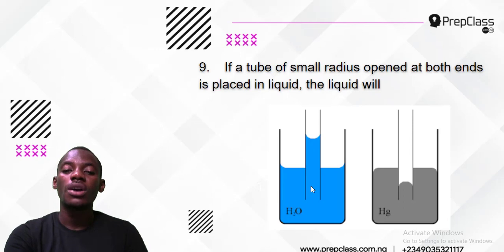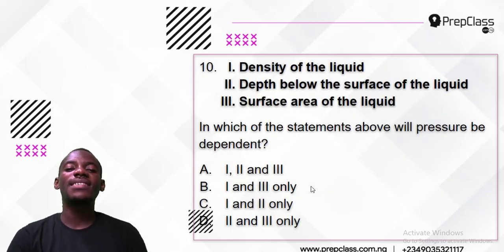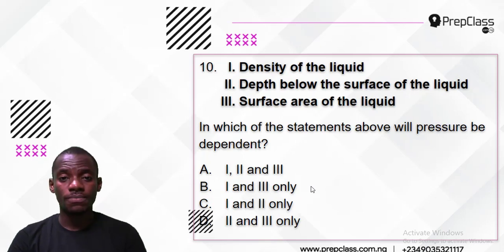Question 10: The density of liquid, depth below the surface of liquid, surface area of liquid - which statements above will pressure be dependent on? Will it depend on density, or depth, or surface area?